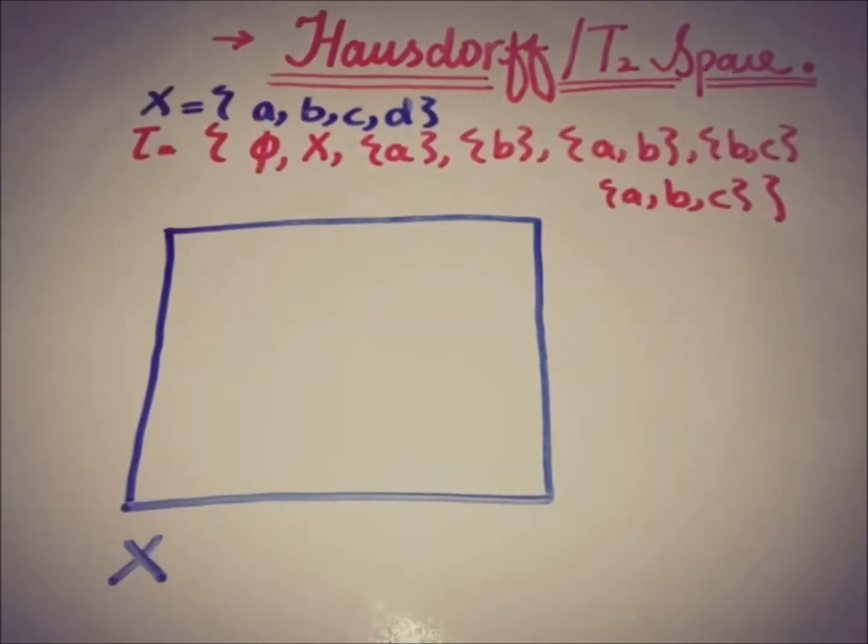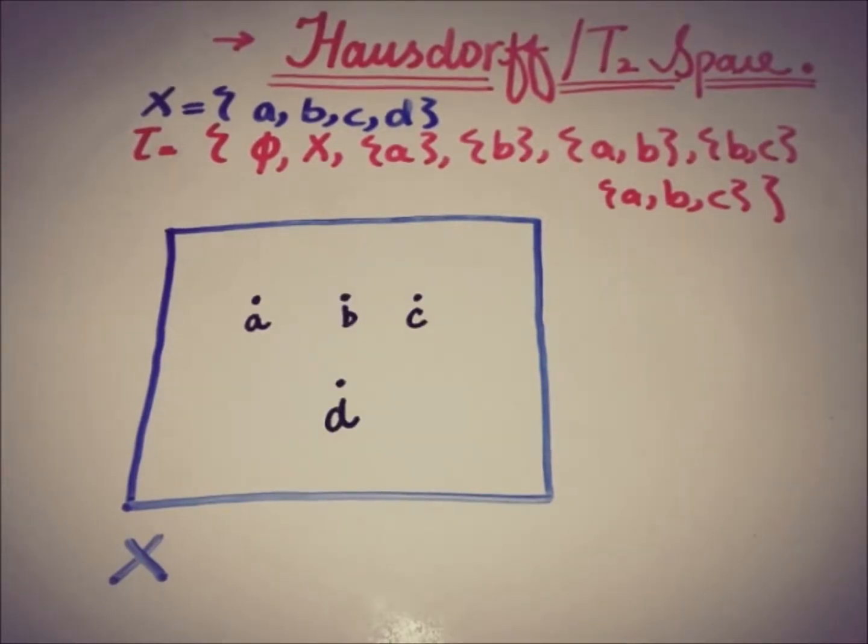Here we have a finite topological space X containing points A, B, C, and D, and a topology tau containing the open sets. We're checking if this topological space is a Hausdorff space or not.